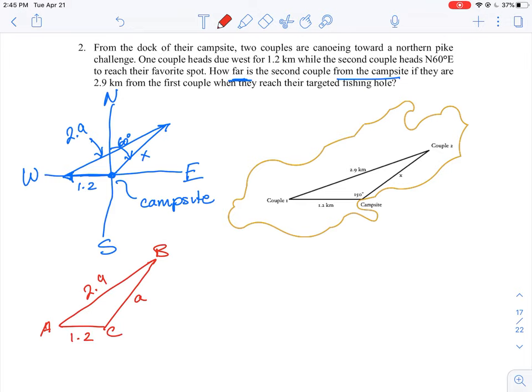So in this triangle, what we are also needing to find is do we know any measures of the angles? Now we don't know what angle A or angle B is, but we do know what angle C is. Angle C is a combination of the 90 degrees from west to north plus the 60 degrees going east off of the north heading.